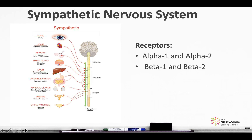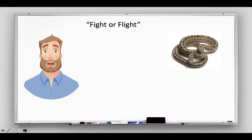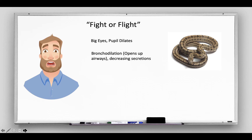So let's focus on the beta-2 receptor. If you come across a snake, your eyes will get big, your pupils will dilate, bronchodilation occurs, your airways open up and there's a decrease in respiratory secretions. Your heart rate goes up and your cardiac output as well.